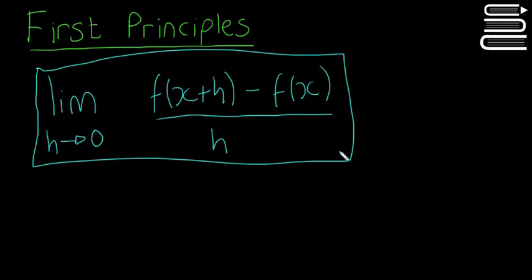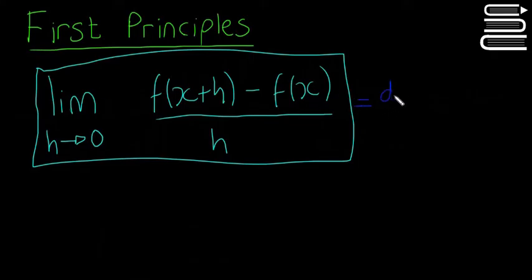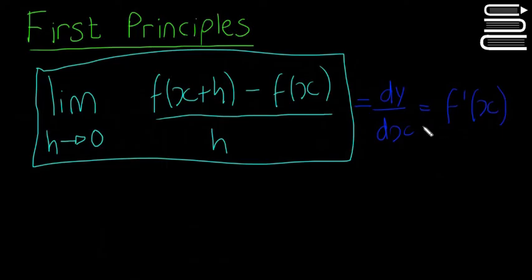So this formula you have to learn off — it won't be in your tables book. The limit, as h approaches 0, of f(x + h) minus f(x), all divided by h. And this is equal to dy/dx, and is also equal to f prime, or f dash of x.